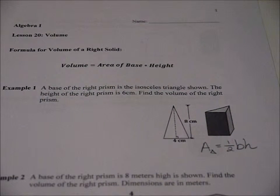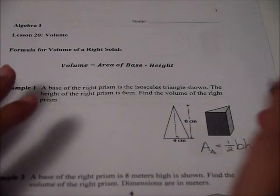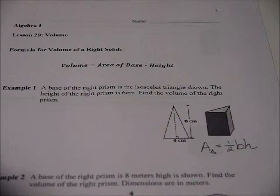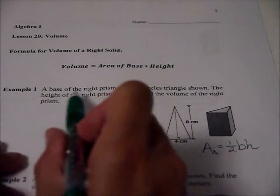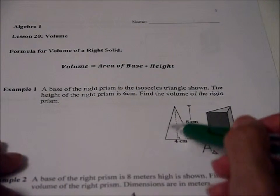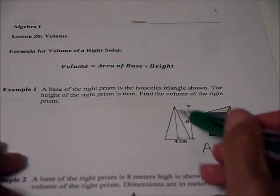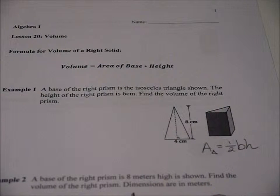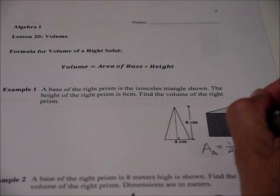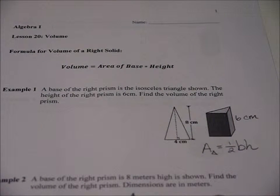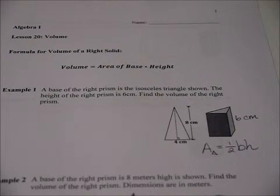Important because we're dealing with area. But I haven't even read it yet and I already realized that was going to probably happen. The base of the right prism is this isosceles triangle shown. The height of the right prism is six centimeters. So this is six centimeters high. Find the volume of the right prism.